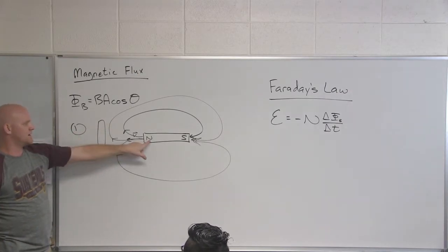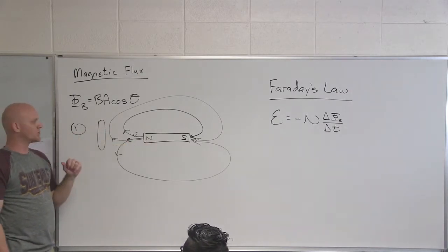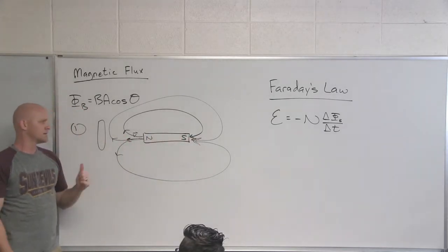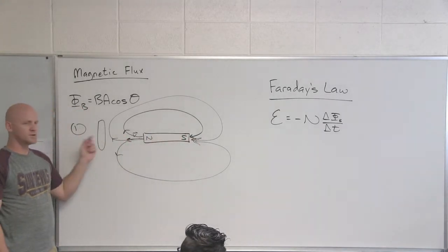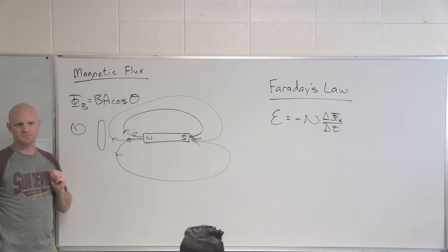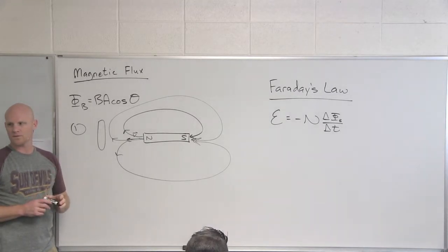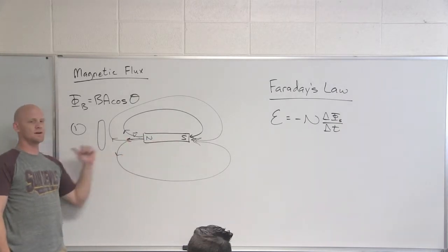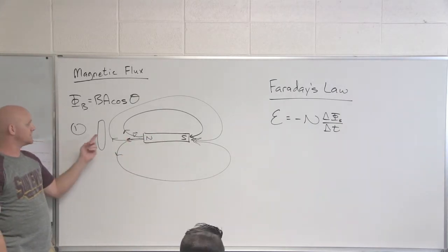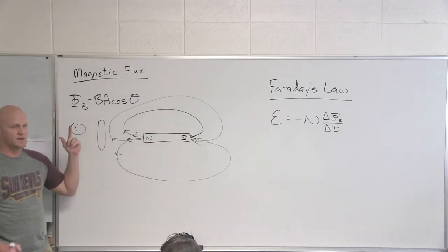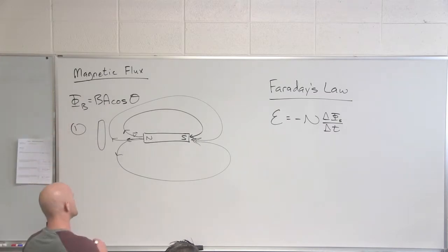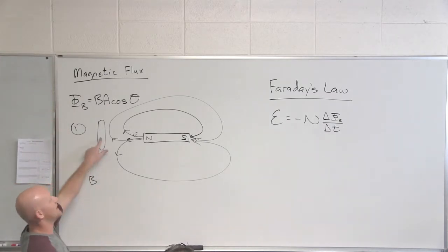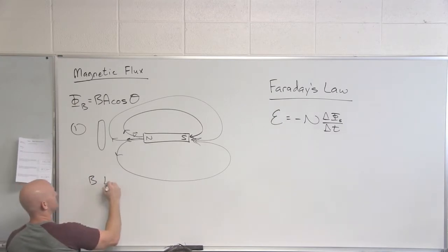The question is: is that magnetic field going to grow or shrink as we start moving the magnet closer to the loop? It's going to grow. Magnetic field is totally distance dependent — the closer this magnet comes to the loop, the greater the magnetic field it's going to feel. So the magnetic field points left at the loop.